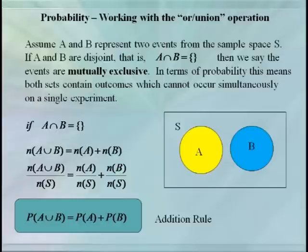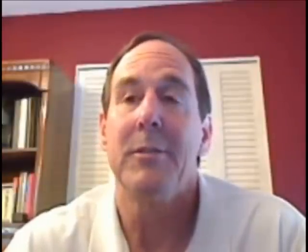In this case, it's easy enough to see that the number of things in A union B is just the number of things in A plus the number of things in B. Now we can divide everything by the number of things in our sample space, and we get that the probability of A union B equals the probability of A plus the probability of B. For obvious reasons, this is called the addition rule for probability.